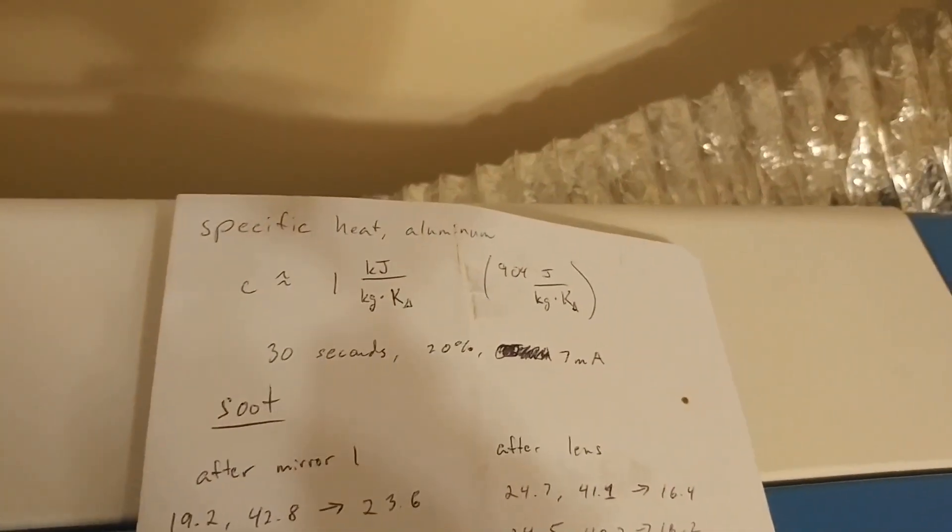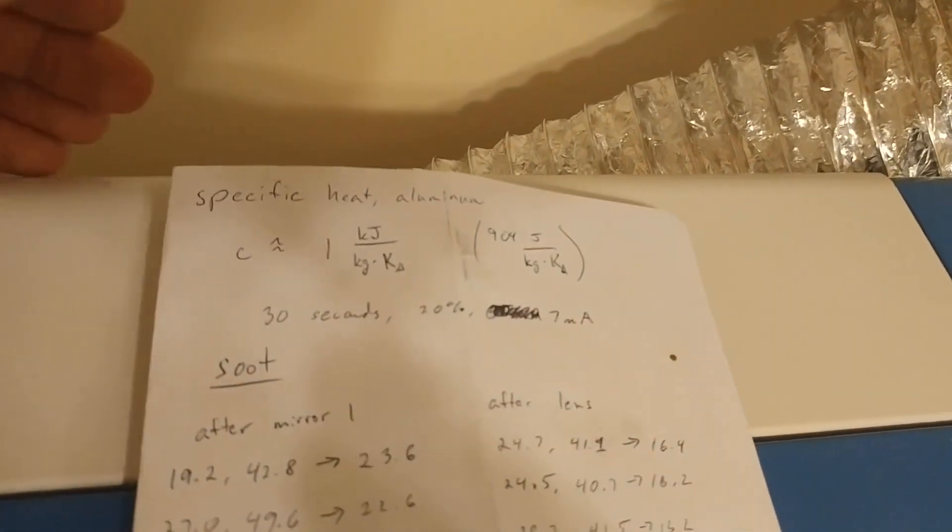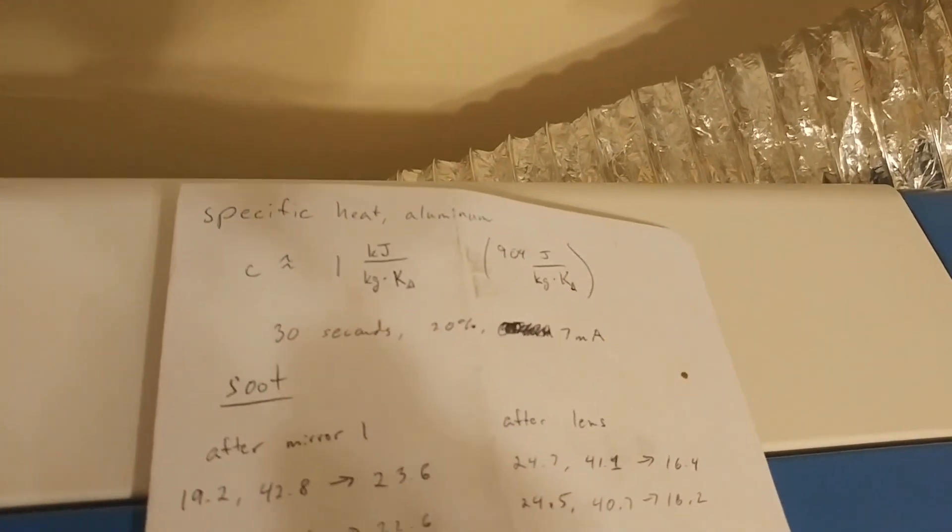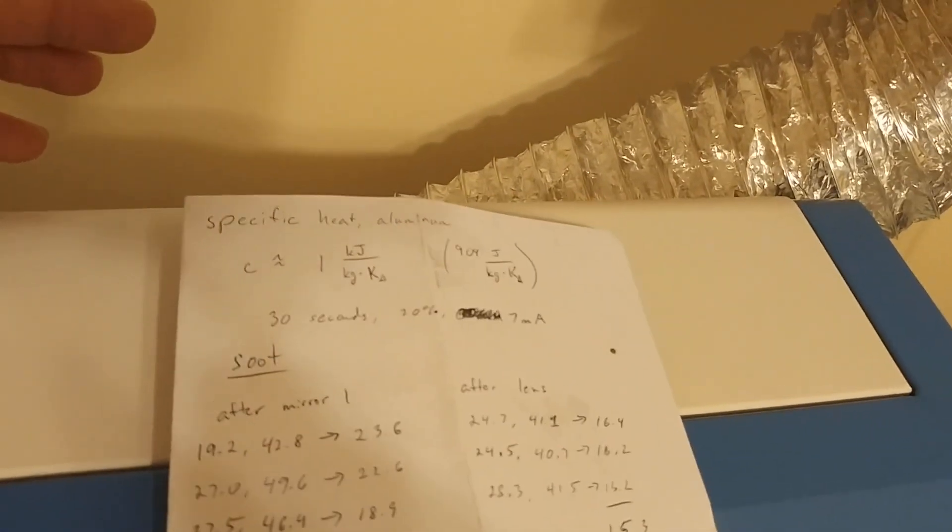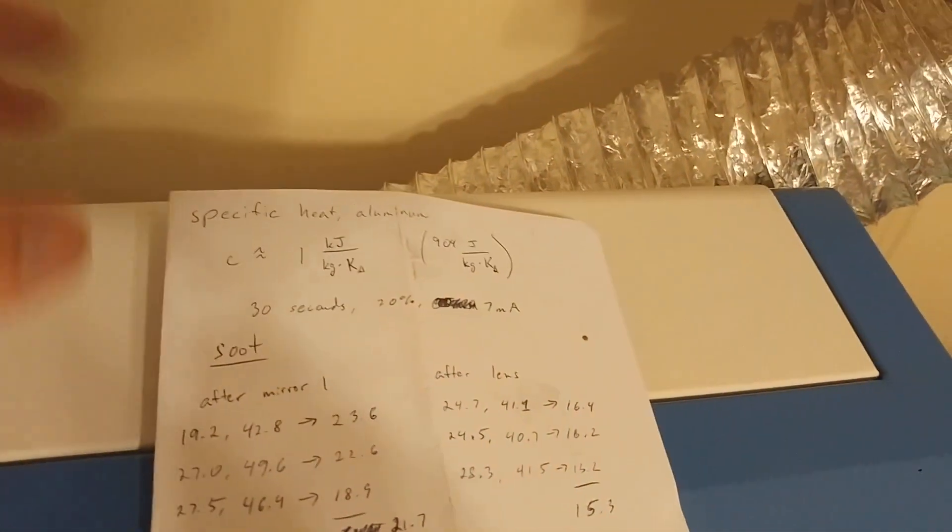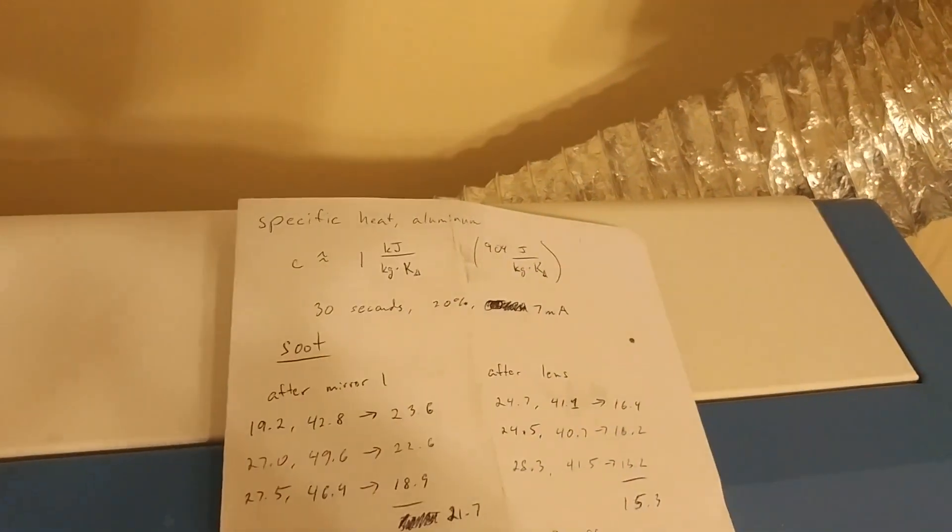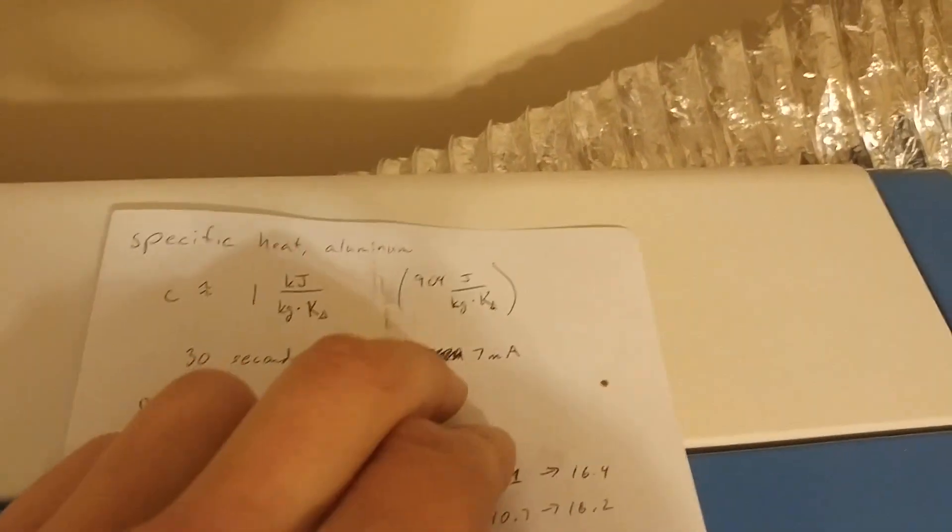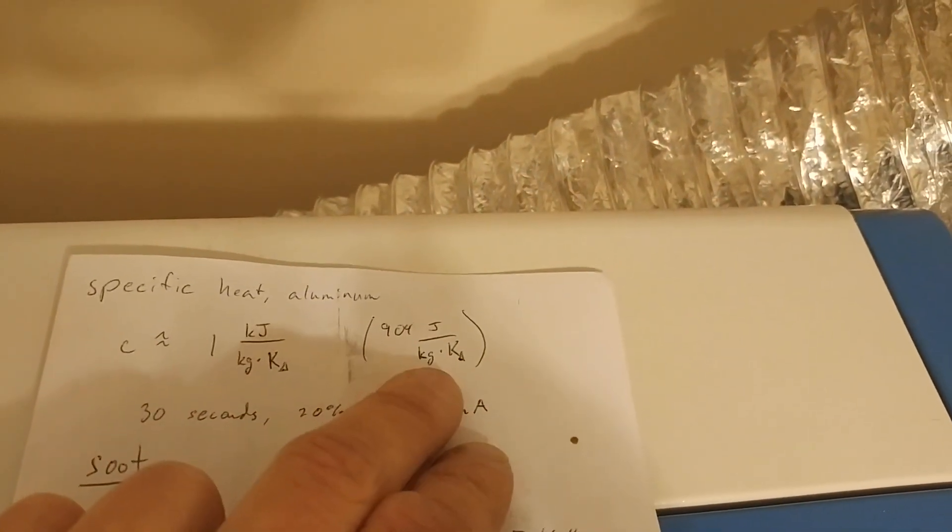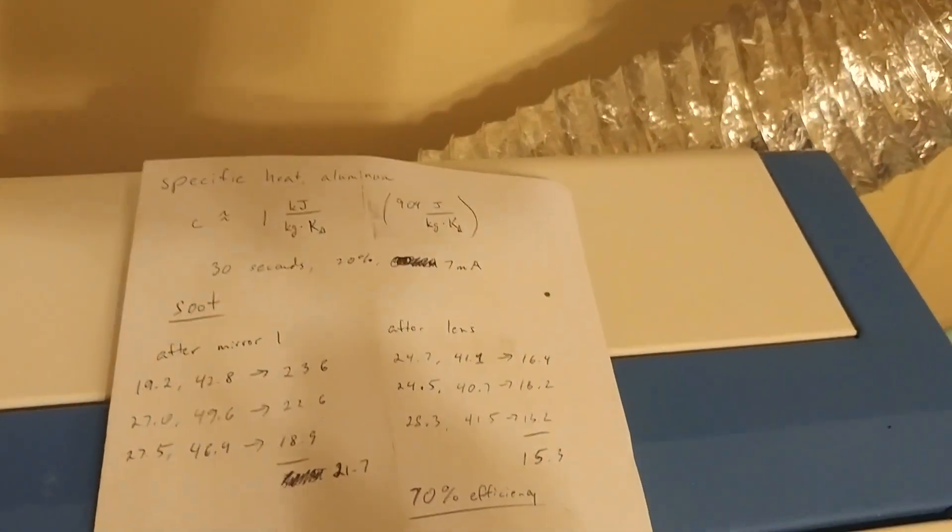So for aluminum, which is what this little block down here is made out of, it's about one kilojoule per kilogram Kelvin difference. So kilojoules are measurement of energy, kilograms are mass, and kelvins are temperature. If you don't know kelvins, they're basically the same thing as Celsius, but more pretentious. So it's a one-to-one ratio there. I think the exact number is like 904 joules per kilogram Kelvin, but one kilojoule just makes the math a bit easier.